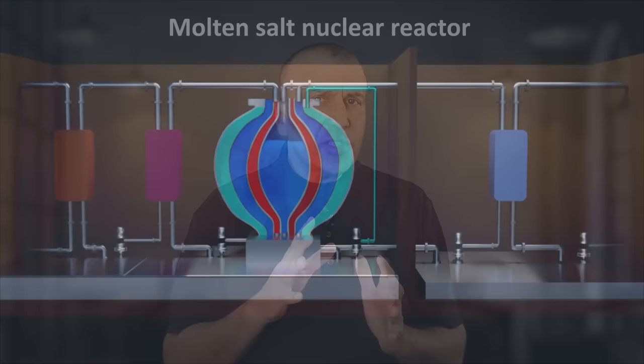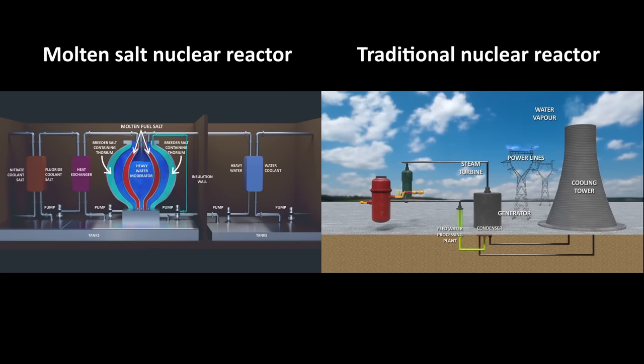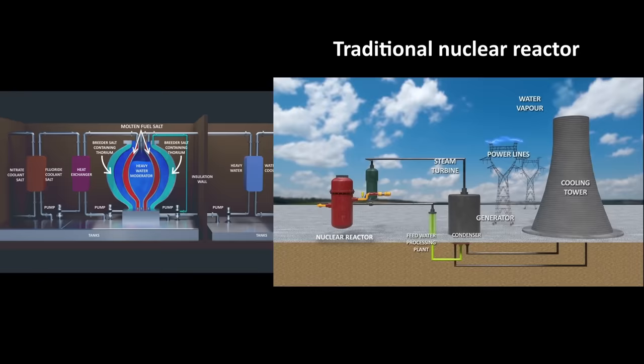But there is a different type of nuclear technology, using molten salt and thorium, which can eliminate many of the problems that commercial nuclear power plants of today are riddled with. To understand how molten salt nuclear reactors can be so much better than current reactor designs, let's compare how traditional nuclear power plants work and contrast that with a molten salt reactor design.